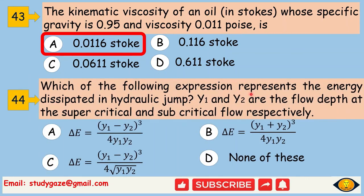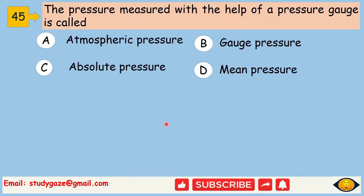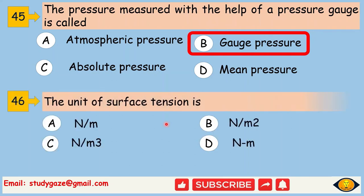Which of the following expression represents the energy dissipated in hydraulic jump? Y₁ and Y₂ are the flow depth at the supercritical and subcritical flow respectively. The answer is ΔE = (Y₁ - Y₂)³ / 4Y₁Y₂. The pressure measured with the help of pressure gauge is called gauge pressure.